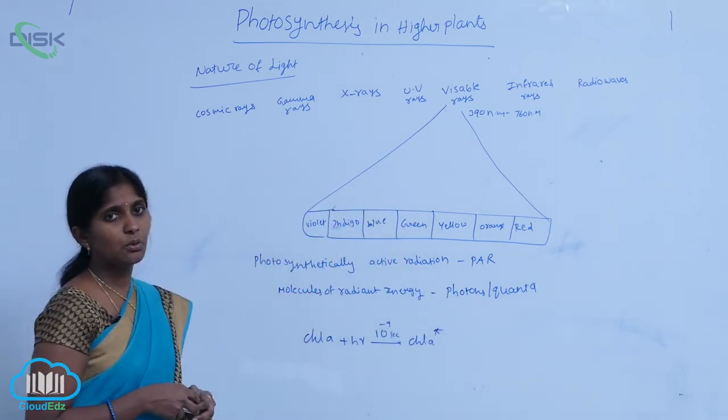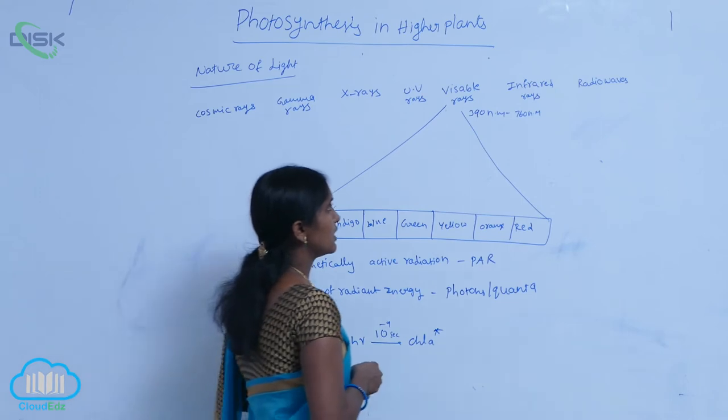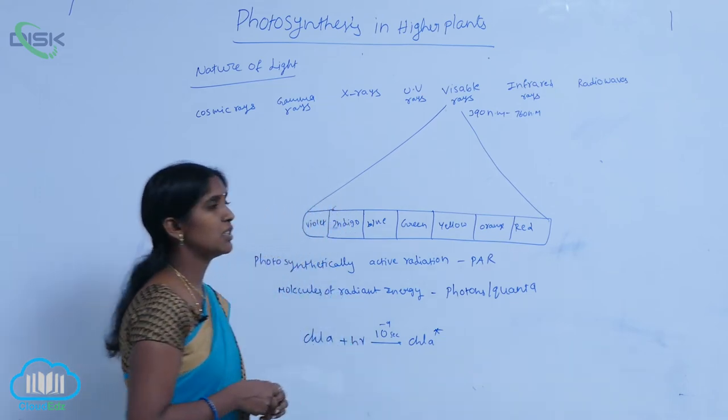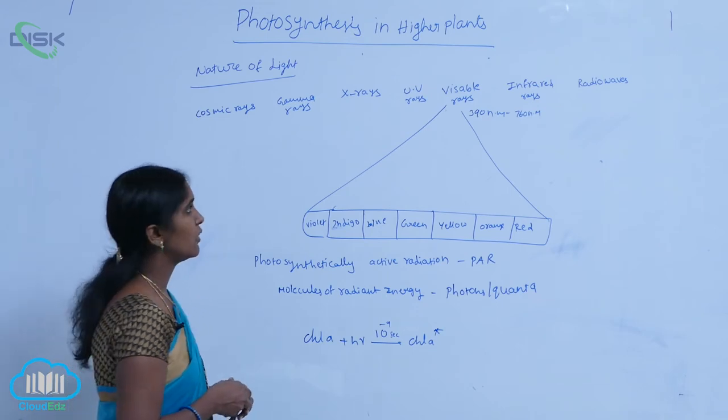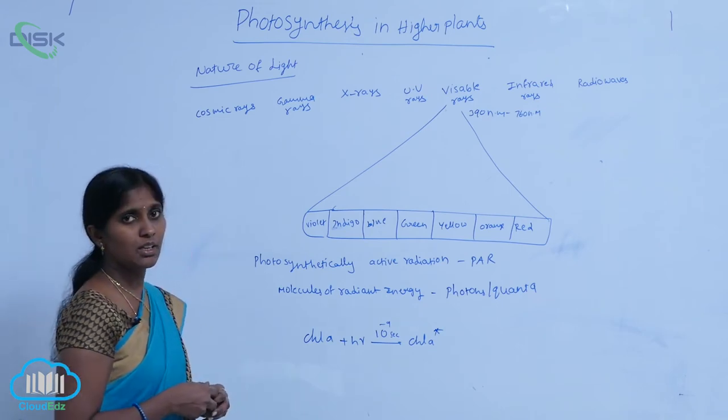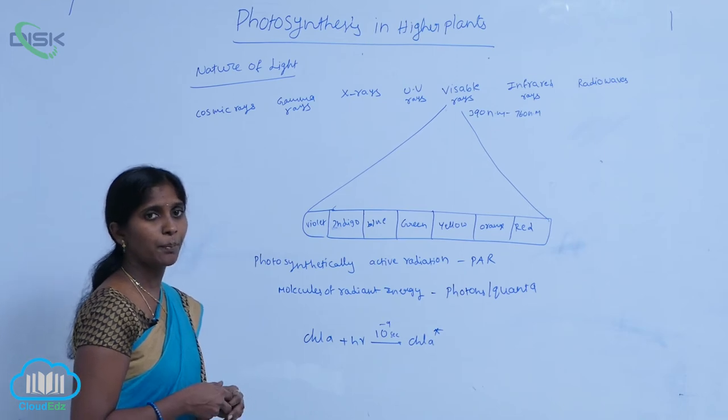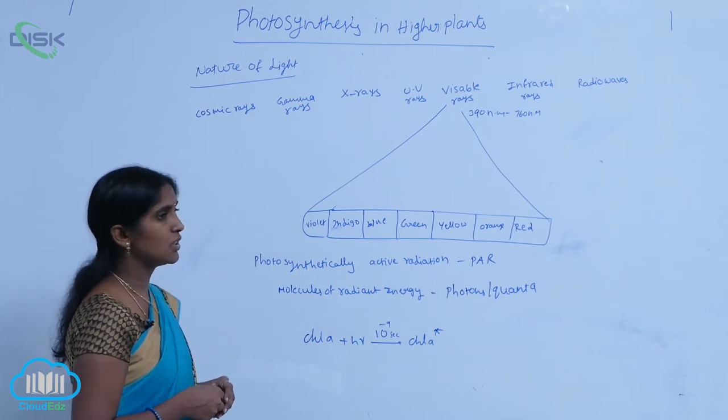Photosynthetically active rays are visible rays. 390 nanometers to 760 nanometers wavelength of light is visible light. It is very suitable for photosynthesis.